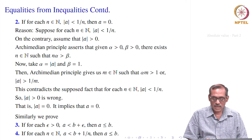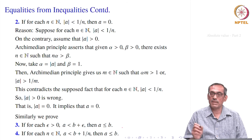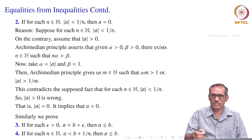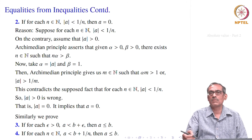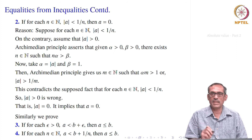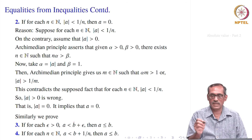The fourth statement says: if a < b + 1/n for every natural number n, then a ≤ b. These four results — in one of these forms — will be useful for showing that something equals something, or is less than or equal to something, when we can only directly prove strict inequalities.